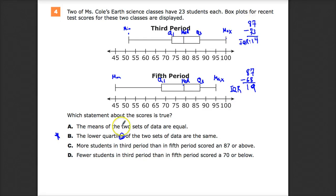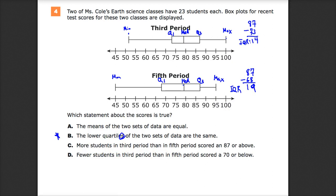And letter D, D has some promise. So fewer students in third period than fifth period scored a 70 or below.